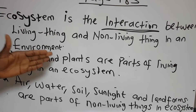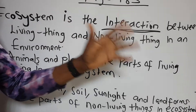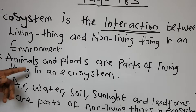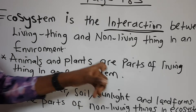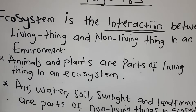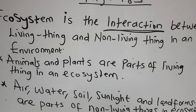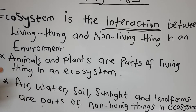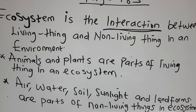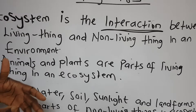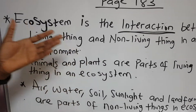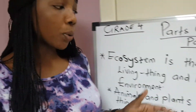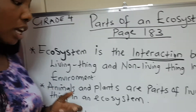Animals and plants are part of living things in an ecosystem. The animals are also living in the farm. The plants can also be found in the forest, which are beneficial to things around them. Animals and plants are living things, as you all know.